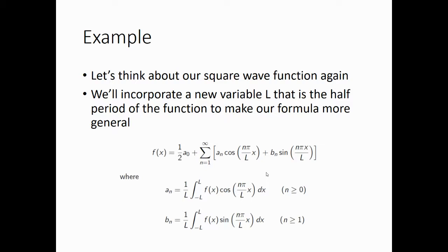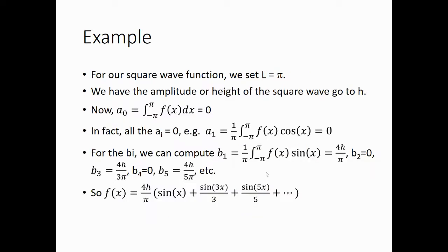So let's think about our square wave function again. And we can incorporate a new variable L that is the half period of the function. And this will make our formula more general. Rather than going from minus pi to pi, we can go from minus L to L. We do have to include L in this formula, but it makes our formula more general.